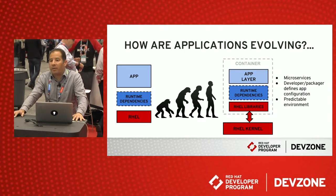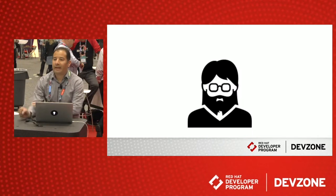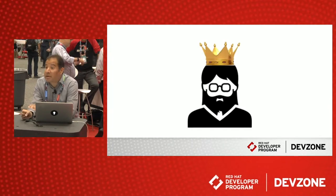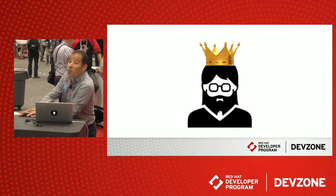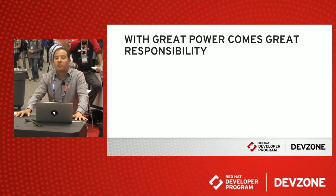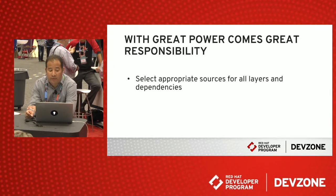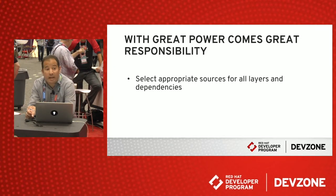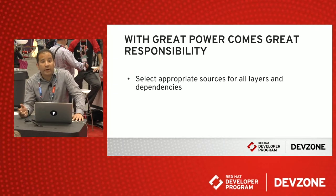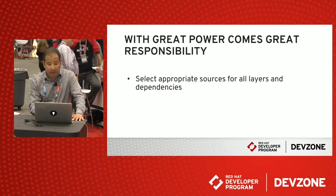This leads to a more predictable environment because there's no drift from what you developed and tested on. This gives a lot of power to the developer — you may even see that the developer is king with containers, because they know what the application uses and what it needs to run. But with great power comes great responsibility. If you're an application provider, you are now in charge of selecting the sources for all the layers and dependencies — not just those things needed to make the application work, but components the application needs to run in a production environment, which sets a higher bar.